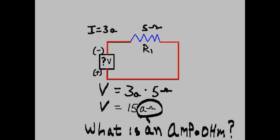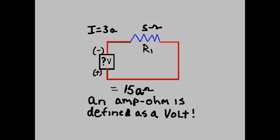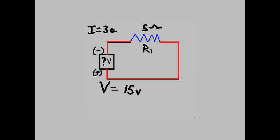What is an amp ohm? 15 amp ohms. An amp ohm is defined as a volt. So V equals 15 amp ohms, V equals 15 volts.